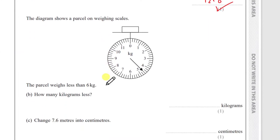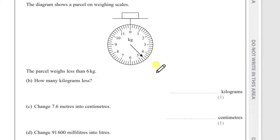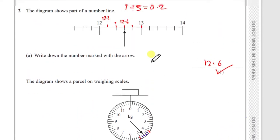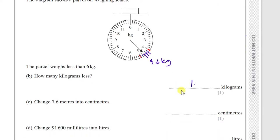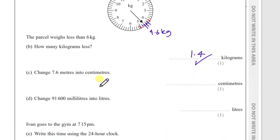Part (b) shows a parcel on weighing scales. The parcel weighs less than 6 kg — work out how many kilograms less. Between 4 and 5 there are again 5 divisions, so it goes up in 0.2s. Reading the scale: 4.2, 4.4, 4.6 — so the parcel weighs 4.6 kg. Then 6 minus 4.6 equals 1.4 kg.